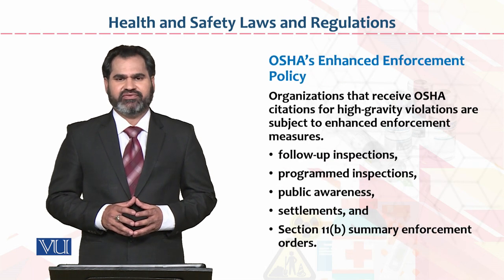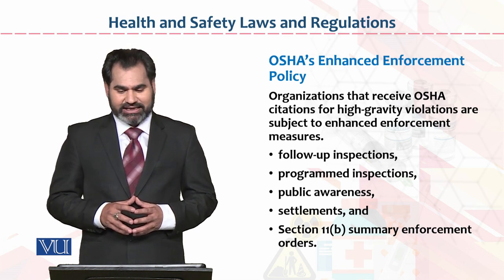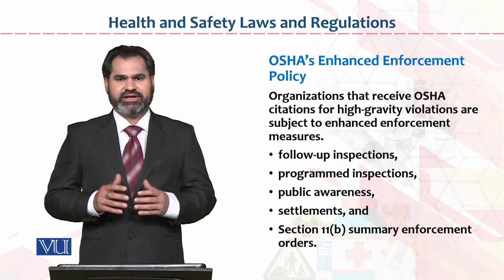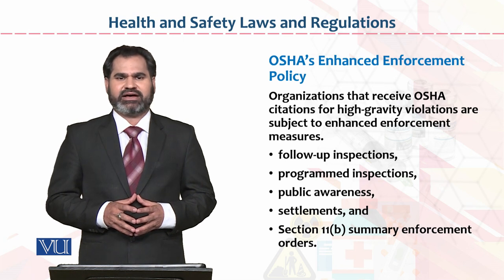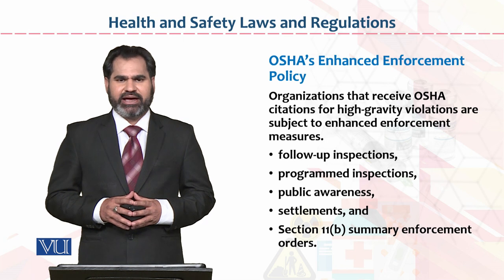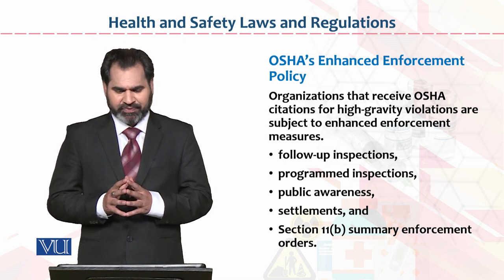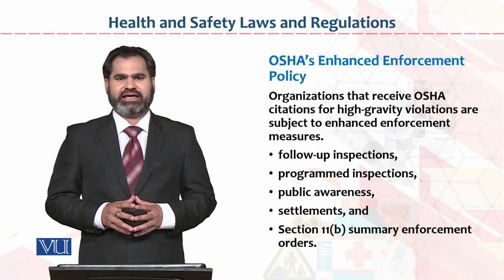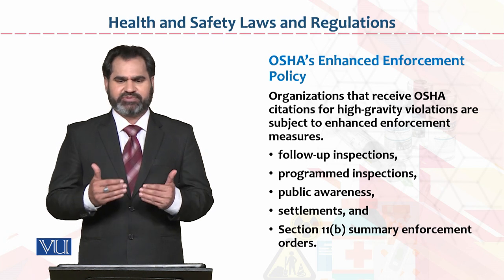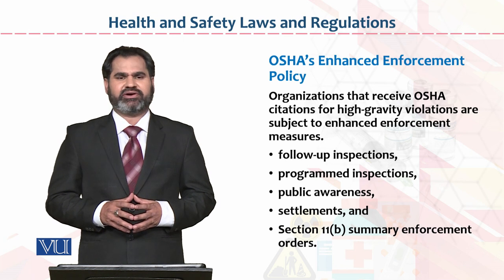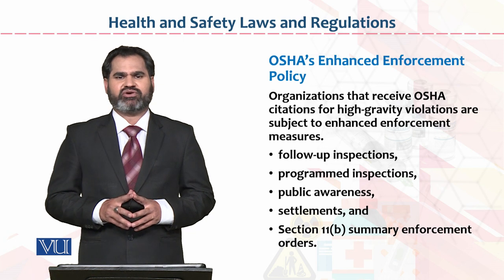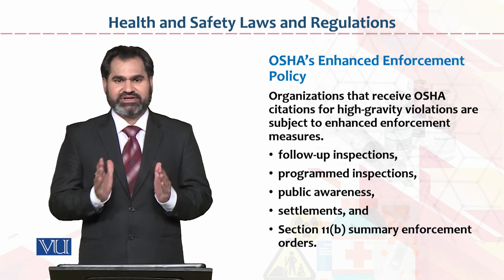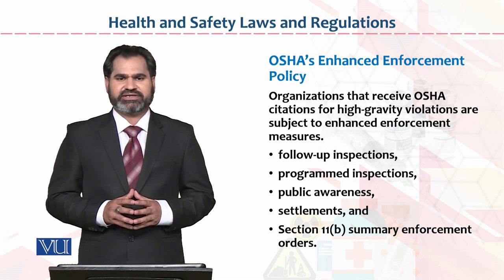Organizations that receive Occupational Safety Health Association citations for high gravity violations are subject to enhanced enforcement measures which are as follows: follow up inspections honi chahiyeh — ek dafa certification leli, us ke baad follow up ke yeh check kiya jaye ki kya un cheezo ko baqaidagi se kiya jaa raha hai ya nahi. Programmed inspection, jo pehle se bata kar ki jati hai. Public awareness among the employees of the organization. Settlement — agar kuch cases disputed hain jo litigation mein chale gaye hain, unko proper settlement ka time diya jata hai, us ke baad inspection ki jati hai. Section 11b: summary enforcement orders — all the orders which are issued by the Occupational Safety Health Association must be implemented by the organization, because they have already been obtained with relevance to ISO certification.